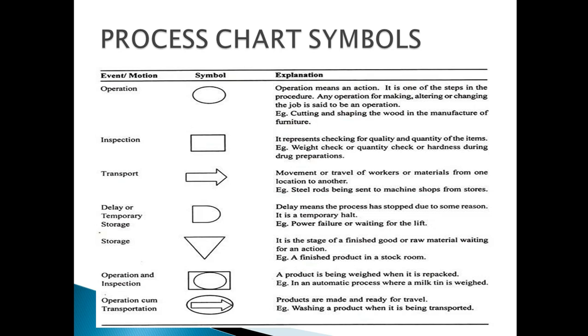Today we are going to discuss process chart symbols, where we'll cover various operations and which symbols represent them. First is operation, which denotes what process is being done or ongoing. Any sort of physical action falls under the category of operation.